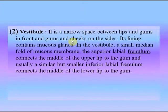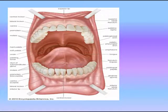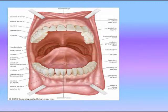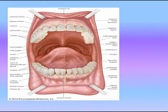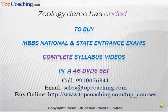The vestibule is the space between the gums and lips in front and the gums and cheeks on the sides. Superior and inferior labial frenula connect the lips with the gums. Its lining has mucous glands. The inferior labial frenulum connects the lips with the gums, and the superior labial frenulum connects lips with the gums as well.